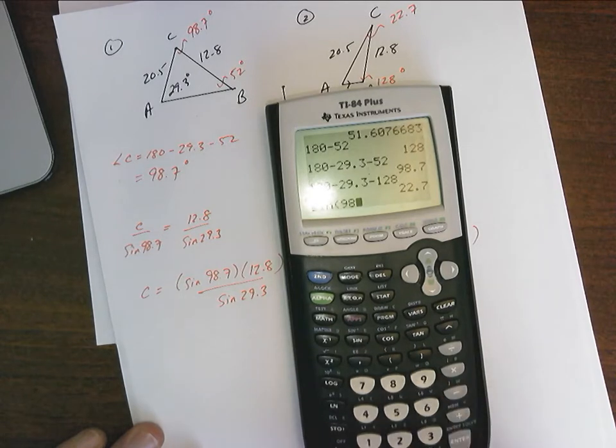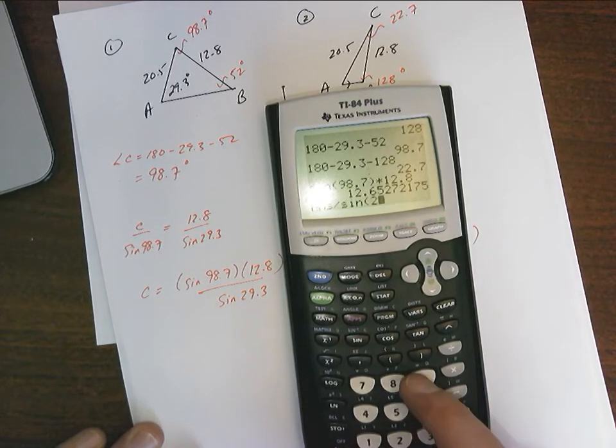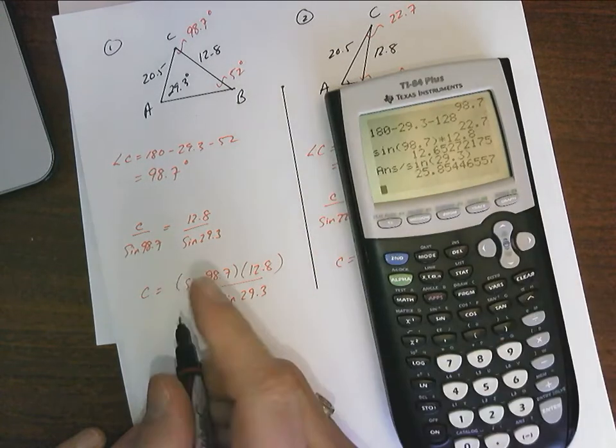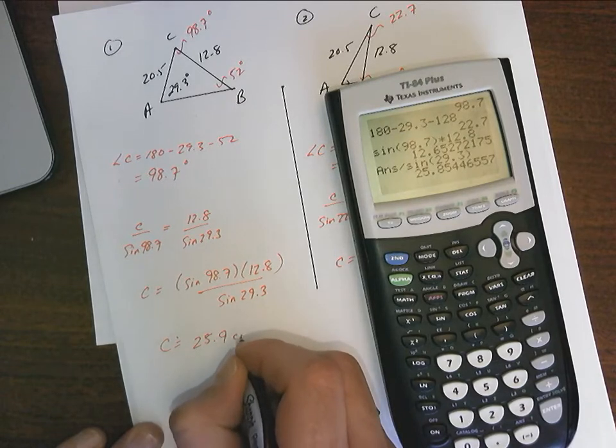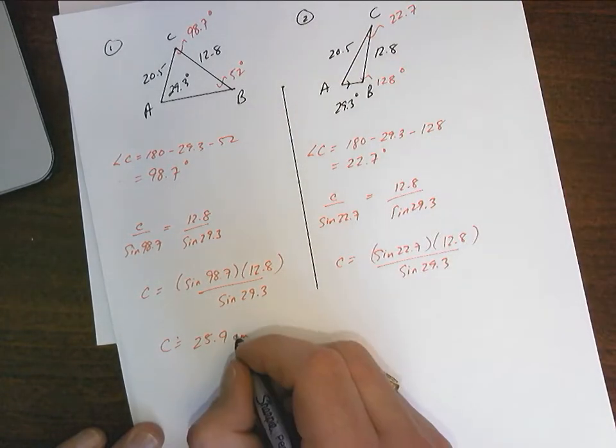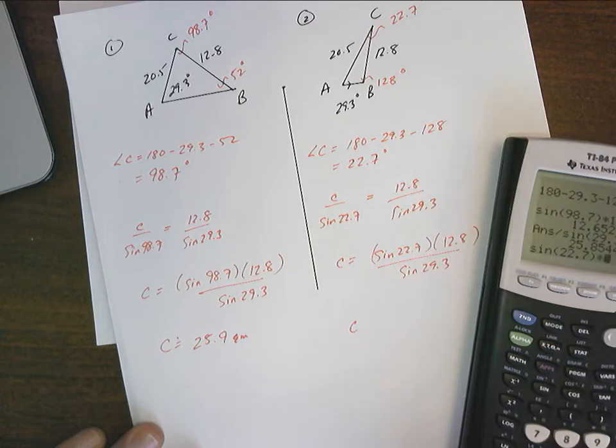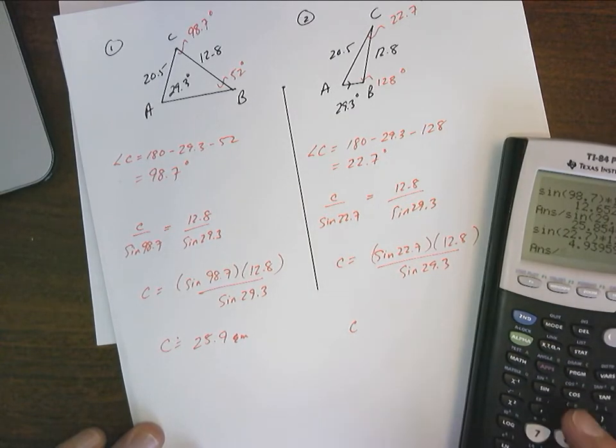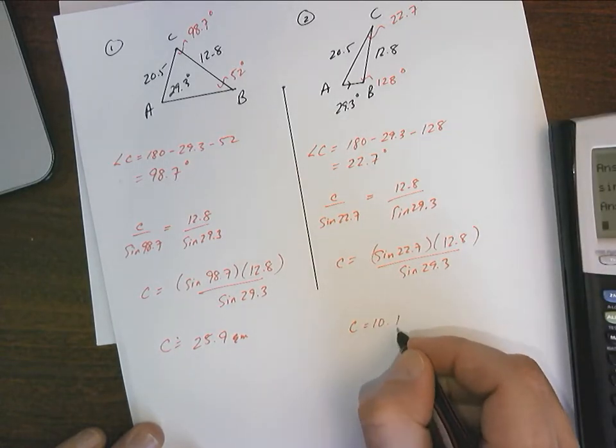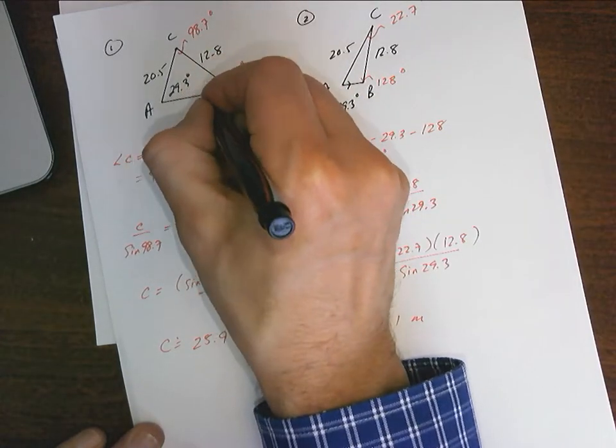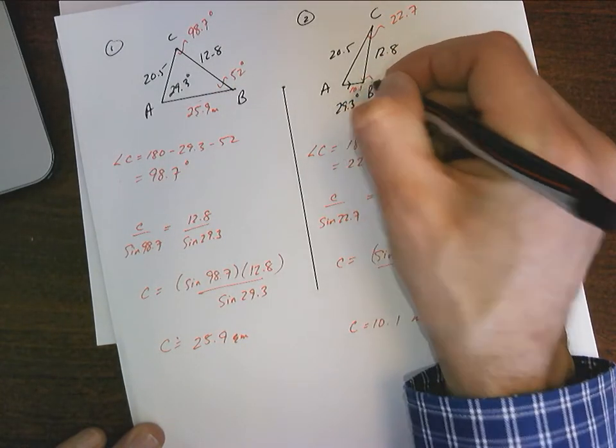Okay, so sine 98.7 bracket times 12.8 equals divided by sine 29.3 end bracket equals C equals approximately 25.9 meters. And this C will equal sine 22.7 times 12.8 equals divided by sine 29.3 equals 10.1 meters. So up here, we get this side length is 25.9 meters. And over here, we get this side length as being 10.1 meters.